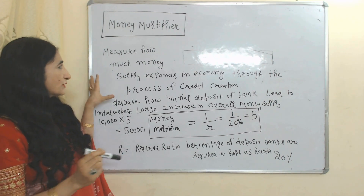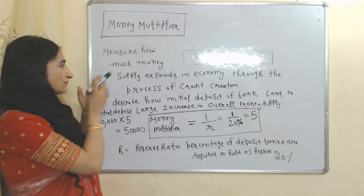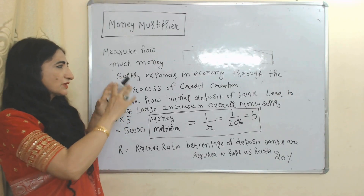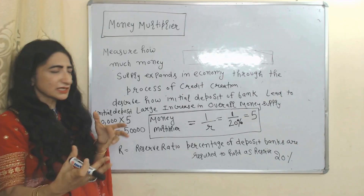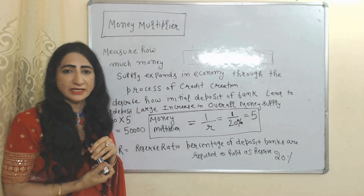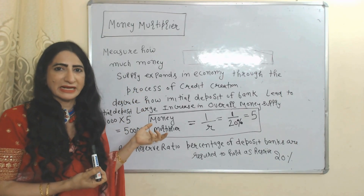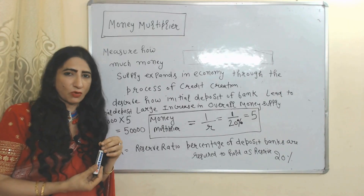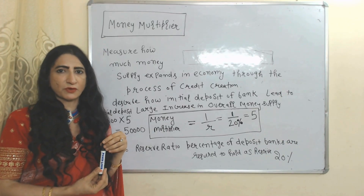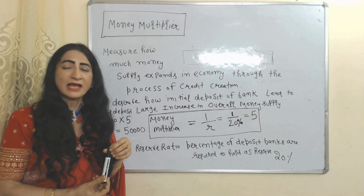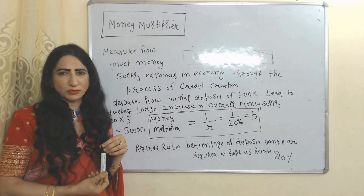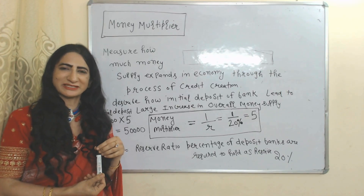So the money multiplier measures how much money expands in the economy through the process of credit creation by banks. That is all about the most important concepts of money supply. Thank you so much for watching this video.